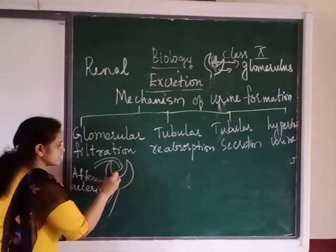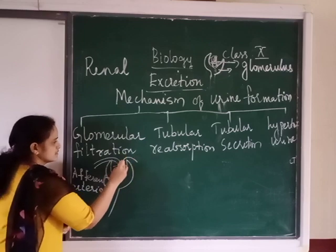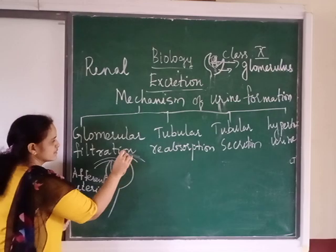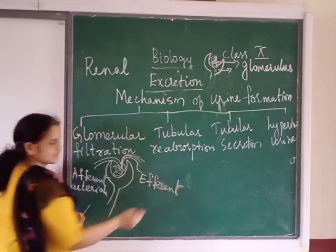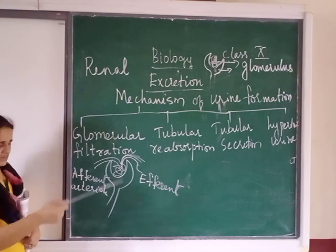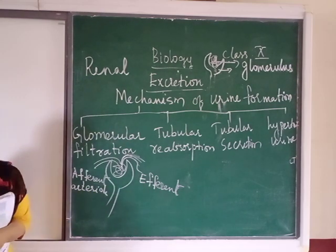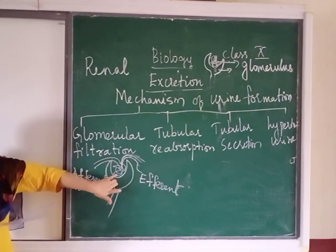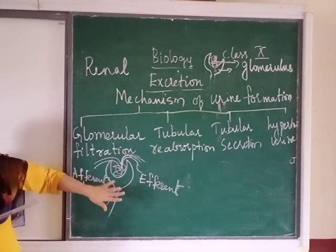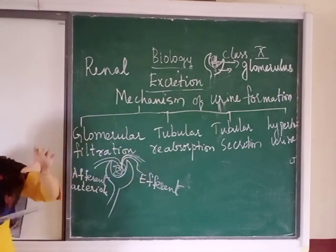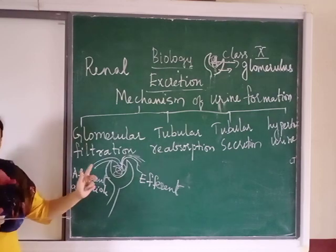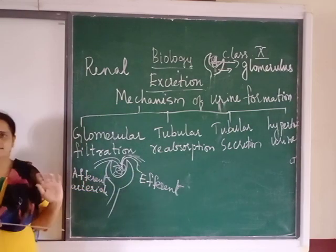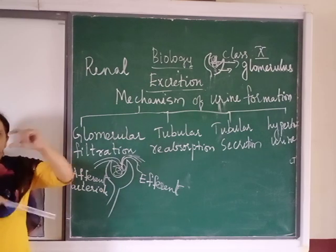When blood comes out of the glomerulus, it is called the efferent arteriole. Both names look similar but differ by one letter and also differ in function. The afferent arteriole brings blood to the kidney, while the efferent arteriole carries blood away from the kidney. Notice that the afferent arteriole is broader, and the efferent arteriole is narrower.